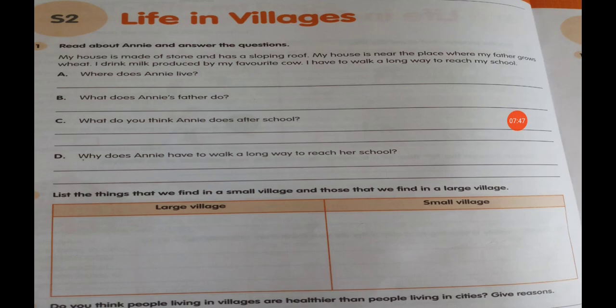Now students, first question, part A: Where does Annie live? Her house is near a farm and her father grows wheat, so she lives in a village. You have to write in part A: she lives in a village.